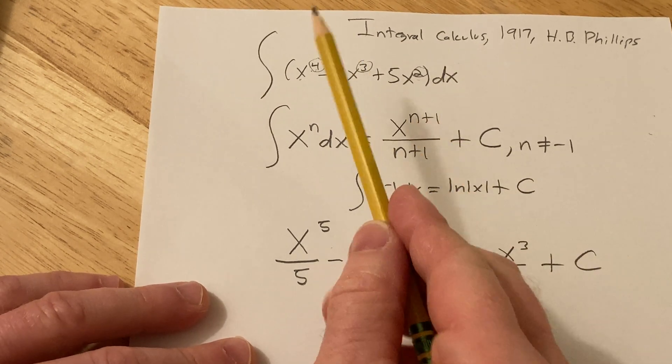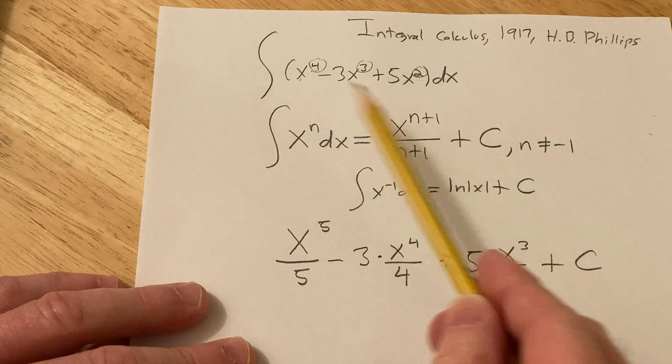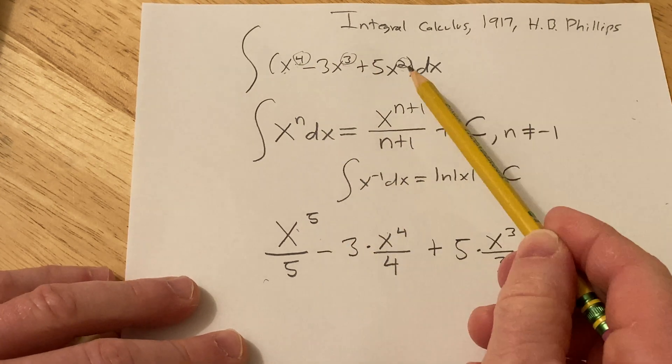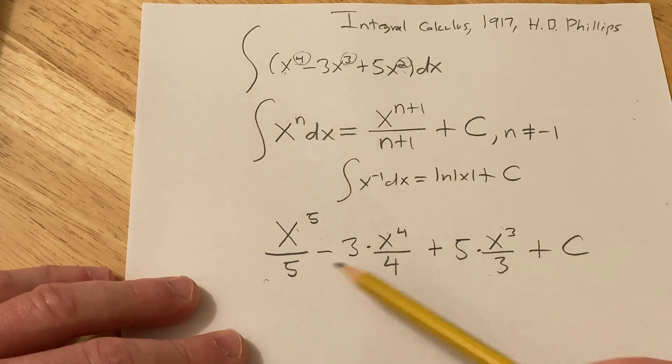So basically, all we did was we added 1 to the exponent every time. So 4 plus 1 is 5, divide by 5. 3 plus 1 is 4, divide by 4. 2 plus 1 is 3, divide by 3, and the numbers hang out.